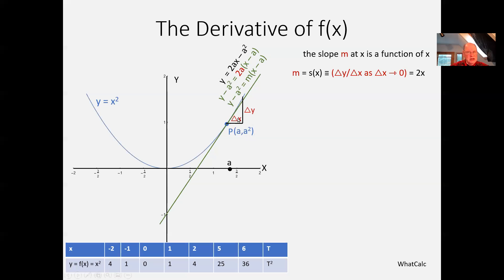Just to remind you where this is coming from: this process. If you look at this carefully, delta-Y is not on the tangent line — I don't know the tangent line. This line goes up to the curve; it goes above the tangent line. I'm taking two points on the curve and letting that point slide down the curve. I don't know what the tangent line is — I can't pick a second point on it. I'm trying to find the tangent line by using that process. Once I get the value 2x for any x, then I can go ahead and draw any tangent line.